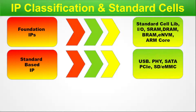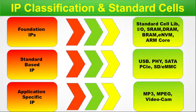Next we have Standard-Based IPs, which include USB PHY, SATA, PCIe, SDMMC, and similar IPs. In the third category — Application-Specific IPs — we can expect MP3, MPEG, video cam, and similar IPs. When you reach out to an IP vendor or foundry, they will ask which distribution type you need: Foundation IP, Standard-Based IP, or Application-Specific IP. Standard cell libraries lie in the Foundation IP distribution, so to obtain them you must ask specifically for Foundation IP.